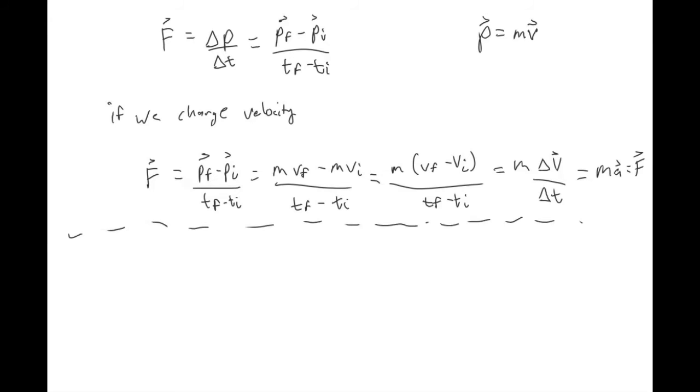However, if we change the mass, now we get some other equation. M final V minus M initial V over T final minus T initial. So there's not really a name for delta M over delta T.